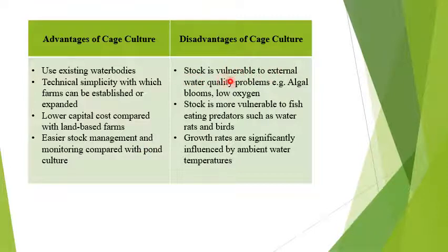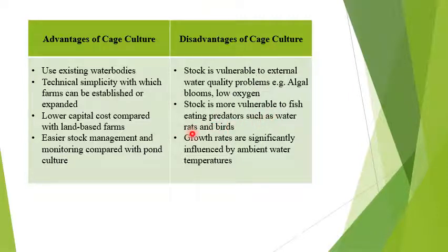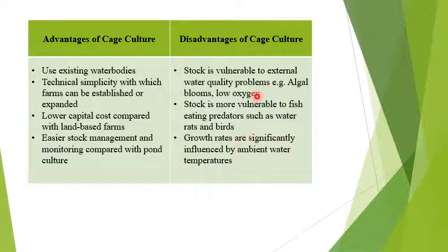Disadvantages of cage culture: stock is vulnerable to external water quality problems like algal blooms and low oxygen. In large surrounding water bodies, you cannot manage algal bloom or oxygen levels, so ecological parameters are outside your control. Stock is also more vulnerable to fish-eating predators such as water rats and birds, as fish cannot escape. Additionally, growth rates are significantly affected by ambient water temperature, meaning you must depend on nature — if conditions are favorable you get good product, if not, your culture may be lost entirely.